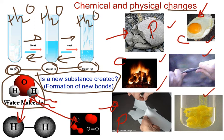If someone's bending a piece of iron — a metal — that also would be a physical change, because when a person's bending it, they're not creating anything new, they're not making any new bonds. So it's physical.